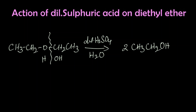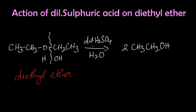Let's write the name for the structure. This is diethyl ether. Diethyl ether hydrolyzed in presence of dilute sulfuric acid. We get two molecules of ethyl alcohol, or ethanol. Thank you.